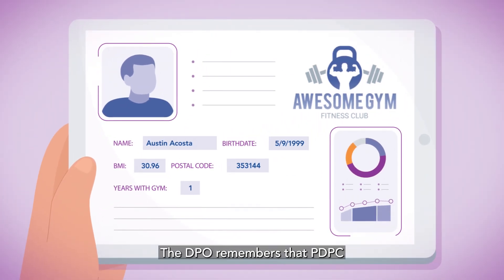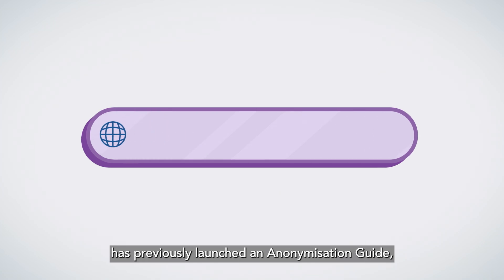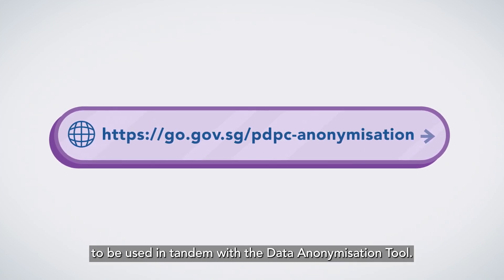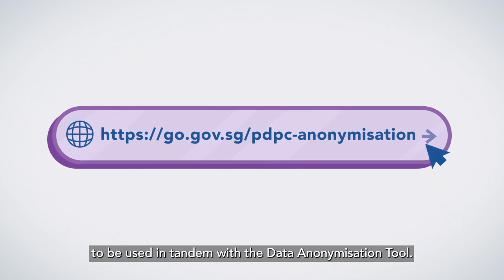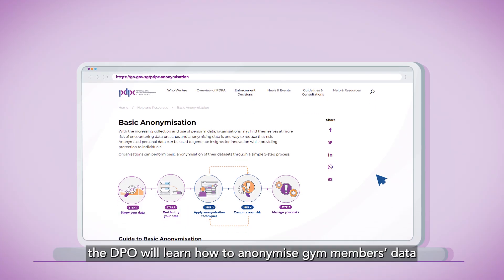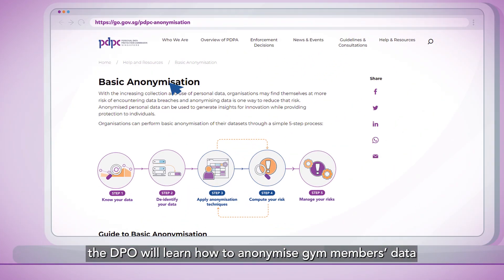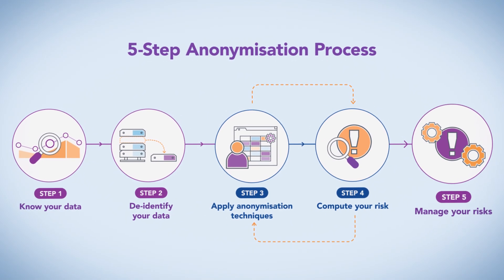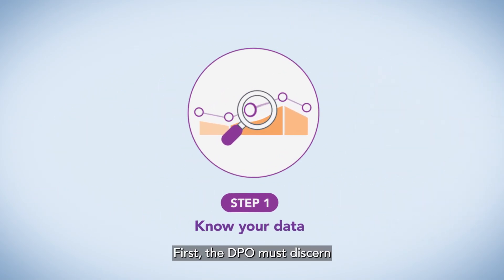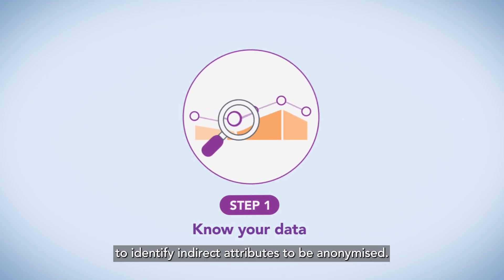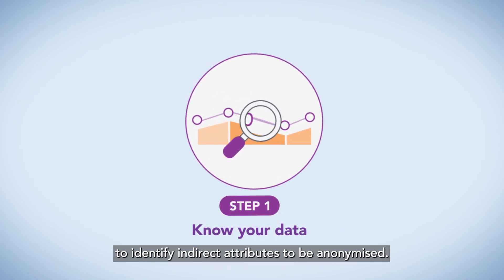The DPO remembers that PDPC has previously launched an anonymization guide to be used in tandem with the Data Anonymization Tool. From the guide, the DPO will learn how to anonymize Jim members' data through five simple steps. First, the DPO must discern the different data attributes in the data set to identify indirect attributes to be anonymized.